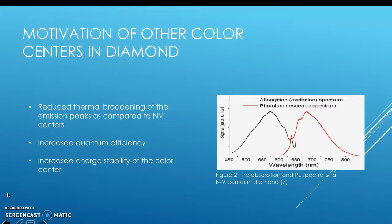Researchers are actively searching for other color centers in diamond because the main color center — nitrogen vacancies — have a wide thermal broadening in their photoluminescent spectra. Thus, we seek reduced thermal broadening, we seek increased quantum efficiency, and we seek increased charge stability from these other color centers.